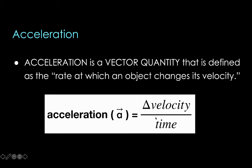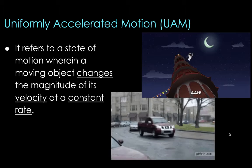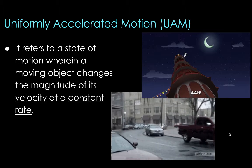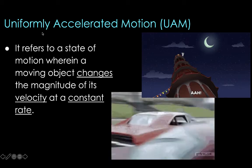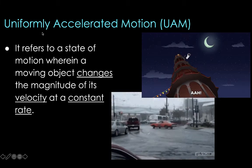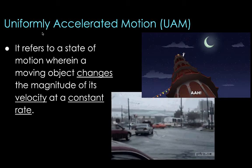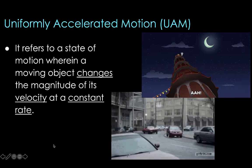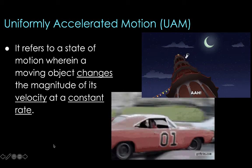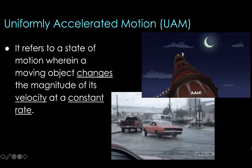To break this equation down further, it's the final velocity minus initial velocity divided by the time that the change in velocity took place. So when you say uniformly accelerated motion, from the term uniform — meaning constant or the same all throughout — it's simply a state of motion where a moving object changes the magnitude of its velocity at a constant rate.